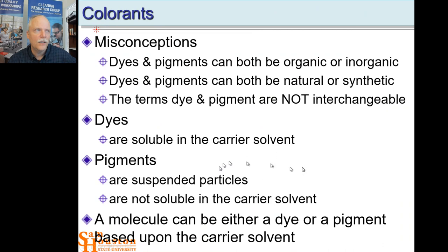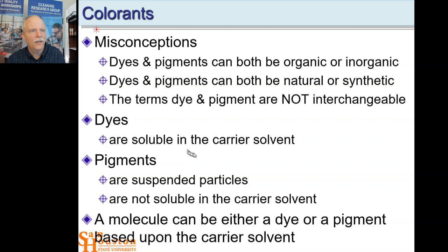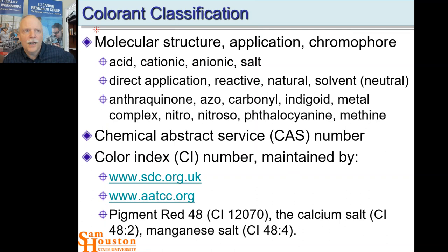Now let's think about colorants in our printing systems. We have dyes and pigments — the only real difference is solubility in the carrier. If it's soluble in the carrier, it's a dye; if it's just suspended, it's a pigment. A molecule could be either, depending on the solvent. Colorants can be categorized by solubility — acidic, cationic, or anionic — or by direct application as a paint or ink. You can use the CAS number for that molecule to ensure you have exactly the same molecule, and there are color index numbers maintained by standards organizations.